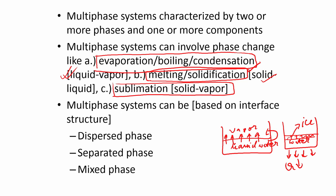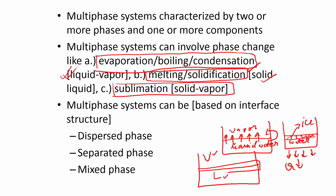Multiphase systems have a specific interface structure. Looking at the problem of liquid water and vapour, you can see that the vapour and the liquid phase are separated by a particular structure — this is called an interface, which is a separating surface that separates the two phases. It could be between liquid and vapour, between solid and liquid, or between solid and vapour.